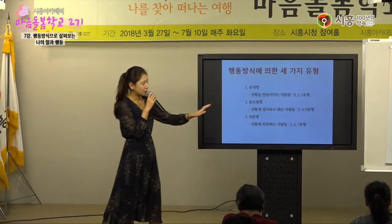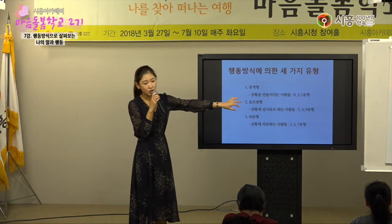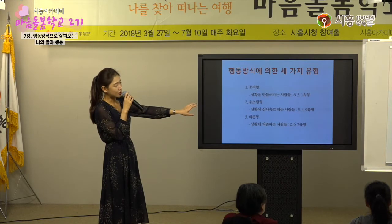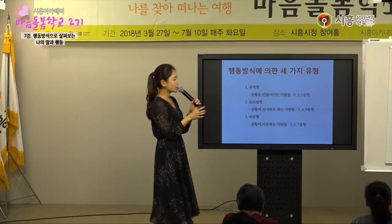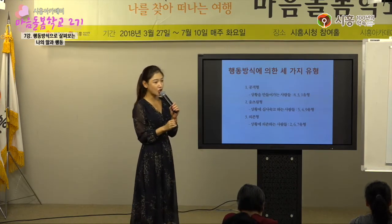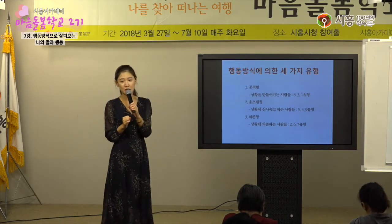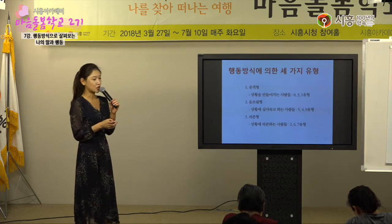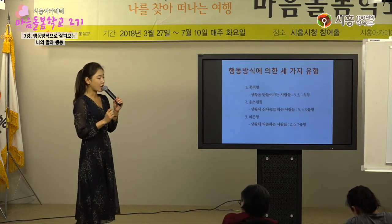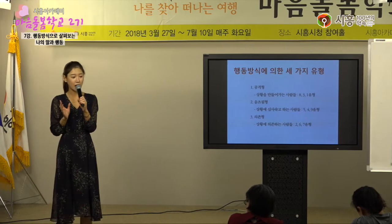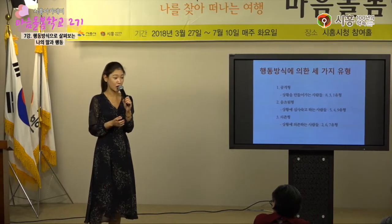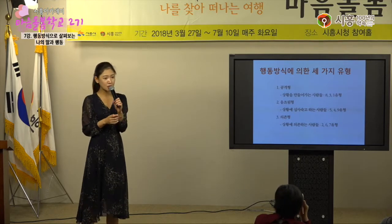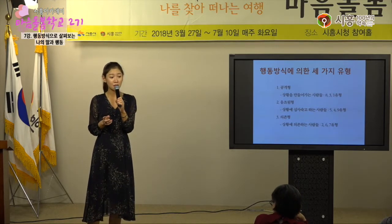만약에 의존형이다, 그러면 6번, 7번으로 좁혀지겠죠. 내가 머리형에 의존형이면 6번, 7번 중에 어떤 유형인지 찾는 거예요. 6번이 가장 집착하는 게 안전이고 7번이 가장 집착하는 게 행복이에요. 이런 식으로 질문을 던지기도 해요. 내 인생에서 안전은 10점 만점 중에 몇 점만큼 중요한가, 행복은 몇 점만큼 중요한가.